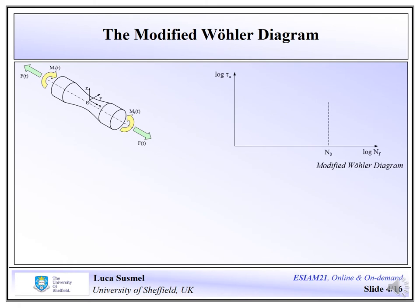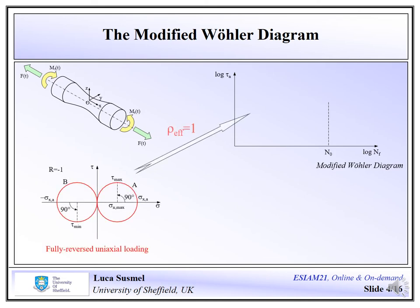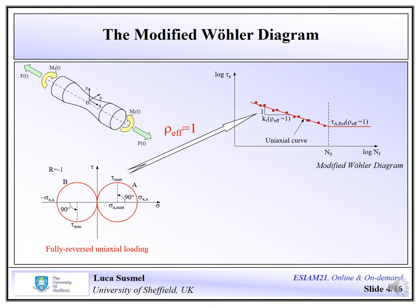According to the modified Wöhler curve method, fatigue damage is estimated via a modified Wöhler diagram, which plots the shear stress amplitude relative to the critical plane versus the number of cycles to failure. This is a log-log diagram. We can consider a simple cylindrical bar initially subjected to a uniaxial fully reversed loading. By observing the Mohr's circles associated with this specific load case, it's easy to see that under uniaxial fully reversed loading, rho_effective is invariably equal to unity.